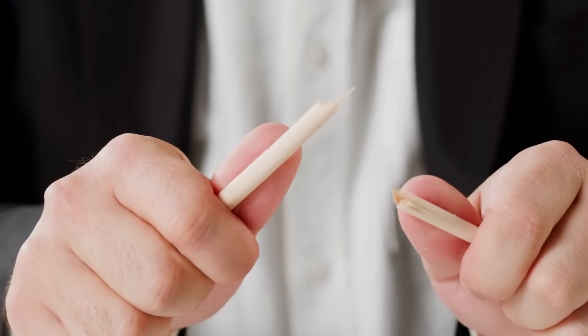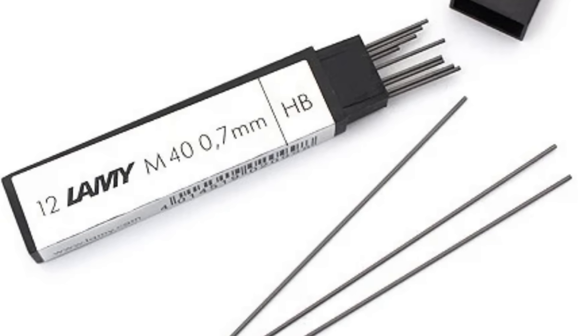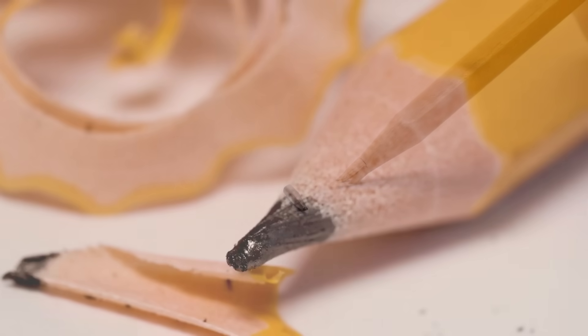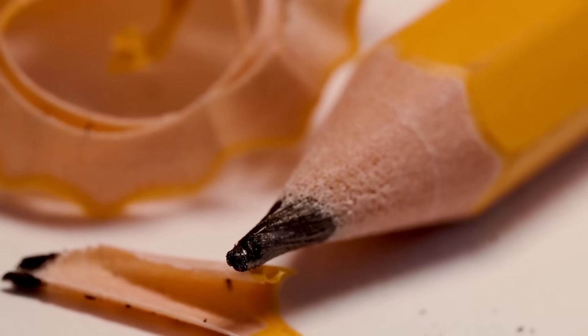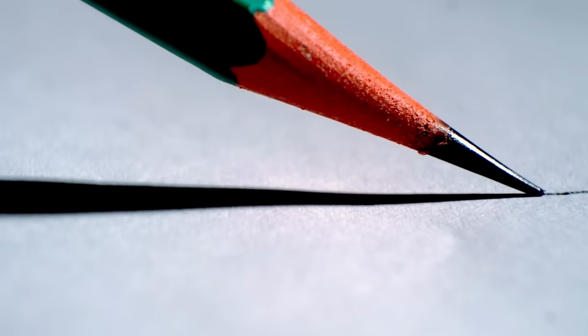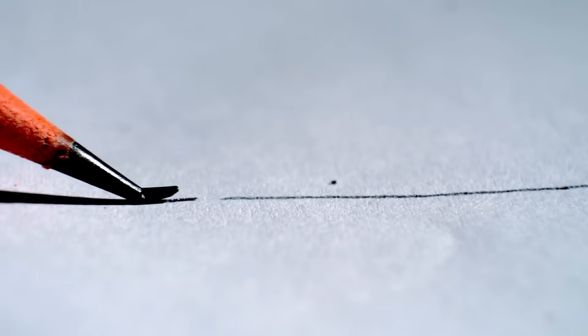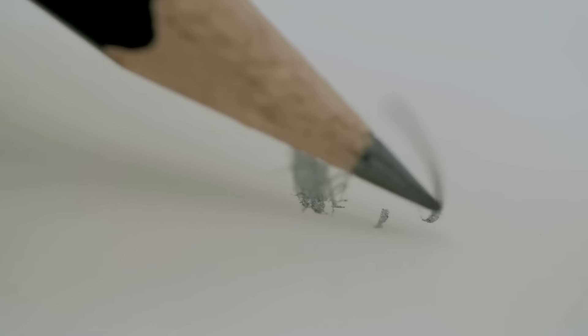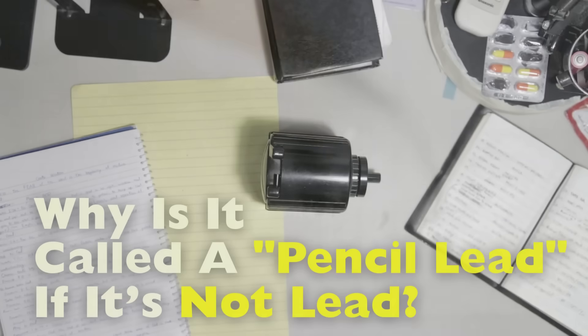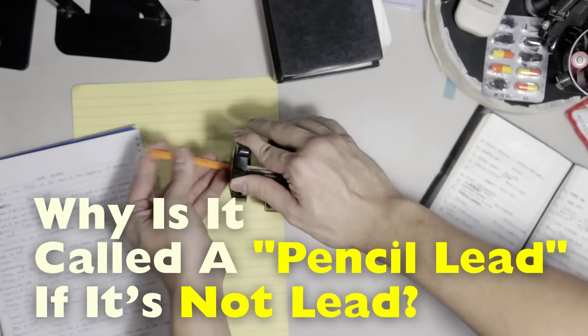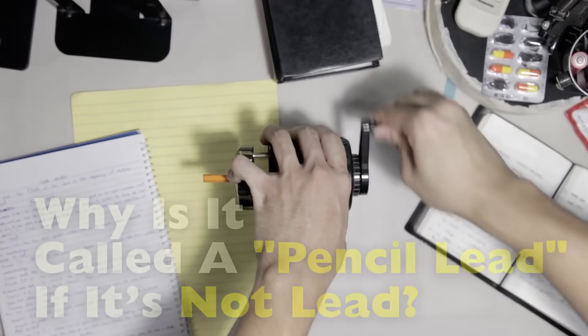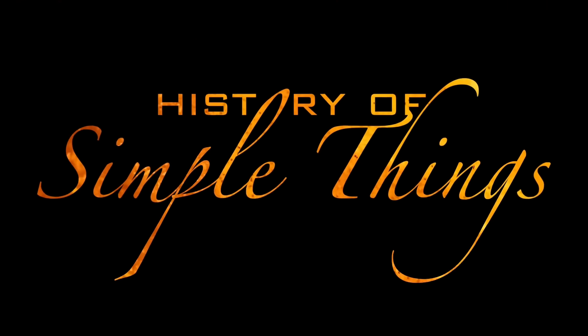It's just a crumbly dark core. So where did the name come from, and why do we still call it lead today even though we know it's actually something else? Let's take a closer look at the history of pencils, the mix-up that gave us the term pencil lead, and how the name just stuck around long enough to become everyday language, right here on History of Simple Things.